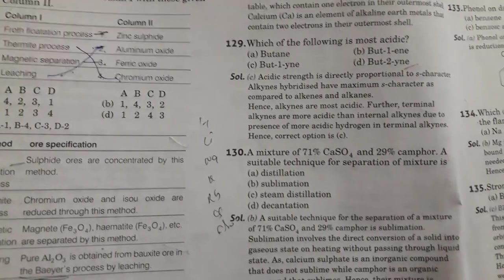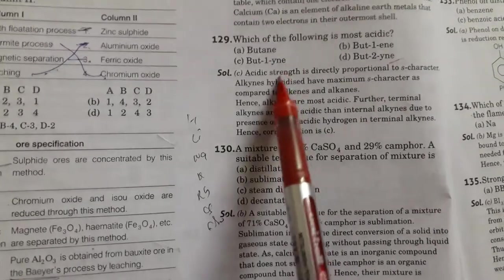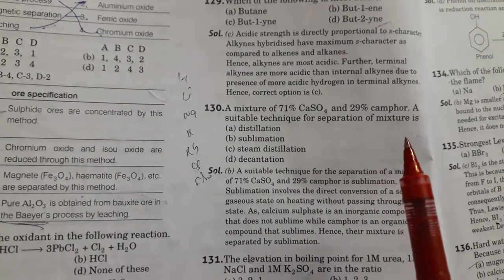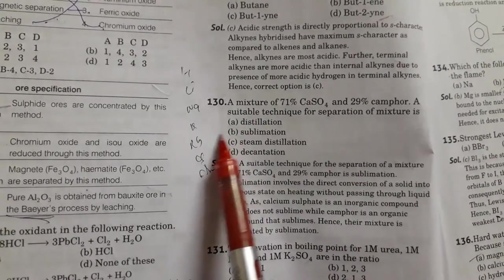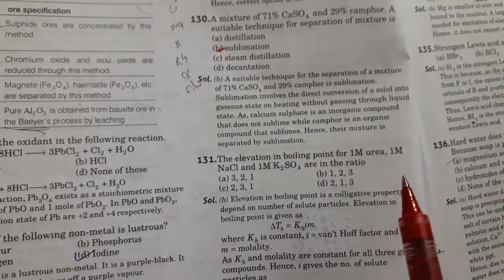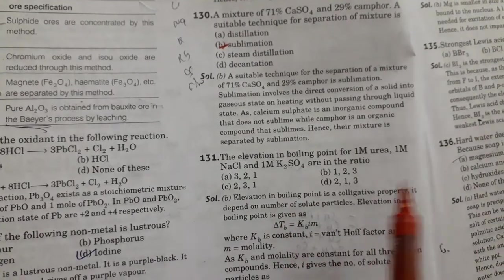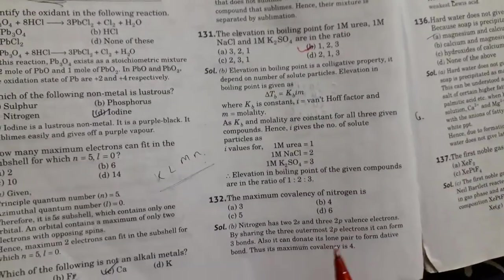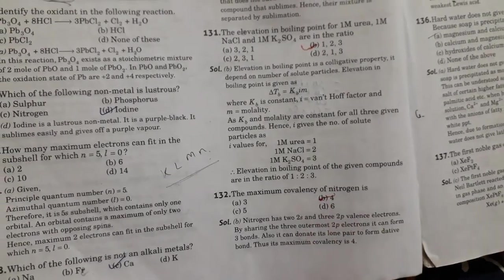Next is which of the following is most acidic. In this case but-1-yne, option C, is most acidic. Then a mixture of 71% CaSO4 and 29% camphor, a suitable technique for separation of mixture is sublimation. Option B is right. Then next is the elevation in boiling point for 1 molar urea, 1 mole urea and 1 mole NaCl and 1 mole K2SO4 are in the ratio 1:2:3. Option B is right. Next is the maximum covalency of nitrogen is 4. Option B is right.